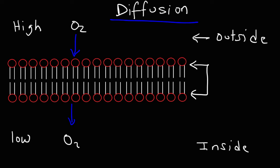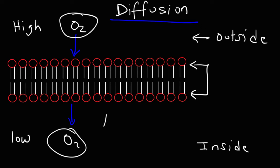What are some factors that affect the rate of diffusion? One factor is the difference in the concentration of O2 outside and inside the cell. The triangle means change. As that difference between those two concentrations increases, the rate of diffusion will increase. So the magnitude of the concentration gradient is proportional to the rate of diffusion.